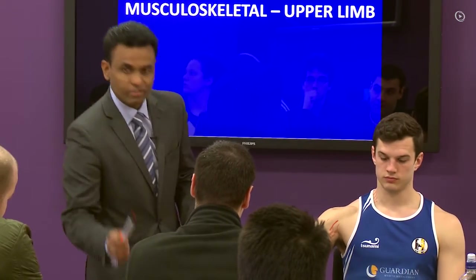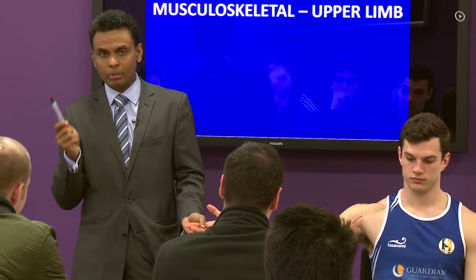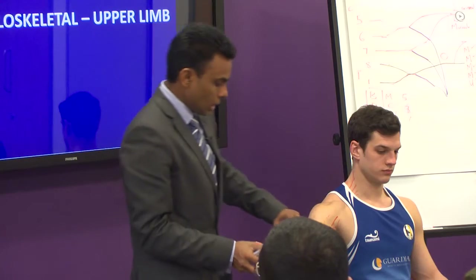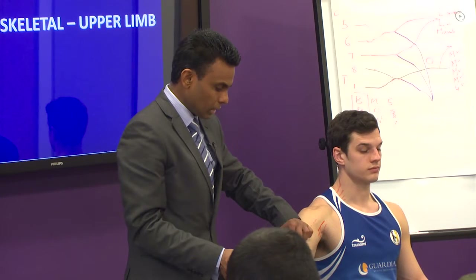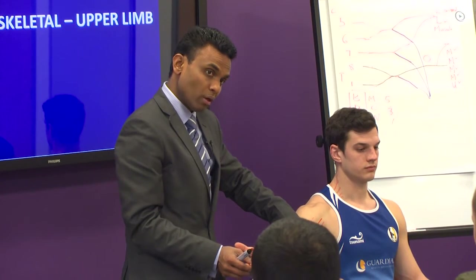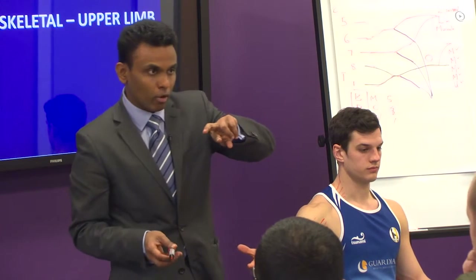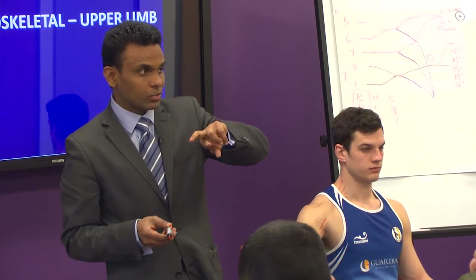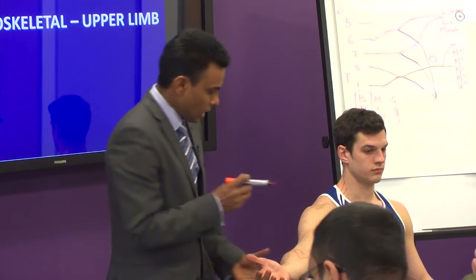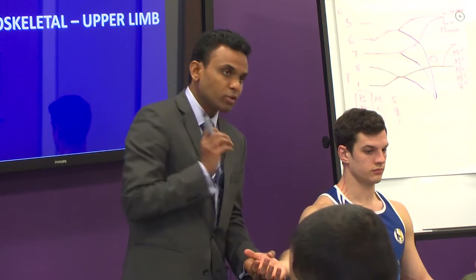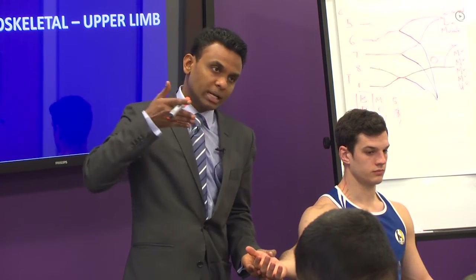The anterior interosseous nerve is a branch of the median nerve — that's the first thing you need to remember. One of the MCQ questions will be: as the median nerve comes into the forearm, it lies between the two heads of the pronator teres. Then it gives off an anterior interosseous branch, which is also called the deep branch.